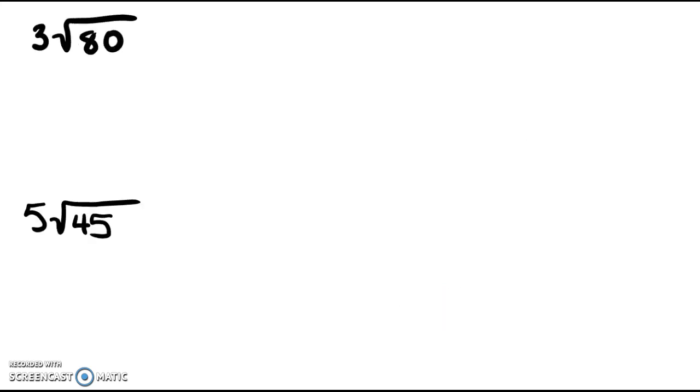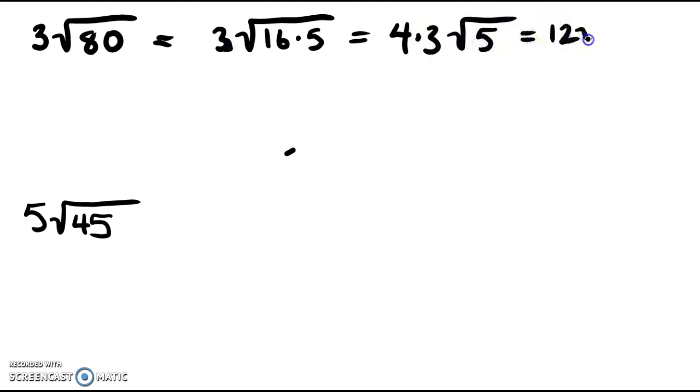Next, if we have a number outside, all we do is simplify it, and any number that we take out, we multiply it by this number outside. I'm going to show you. 3 and 16 times 5 is 80. So the square root of 16 is 4. I'm going to take the square root of 16 and move it outside. This 3 remains, and I'm going to leave the 5 inside. 4 times 3, I've got 12 square root of 5.